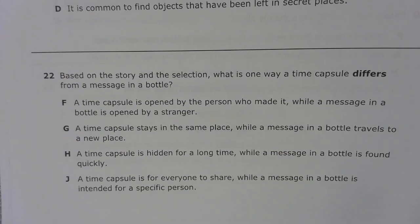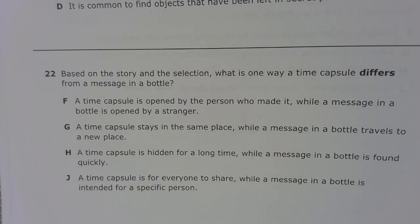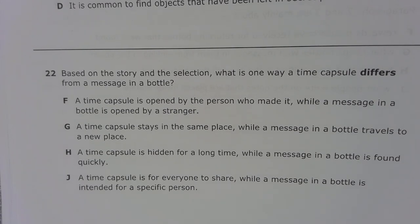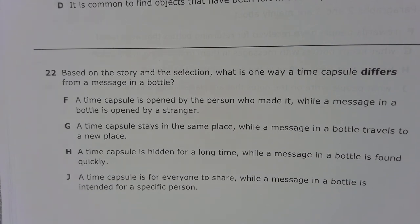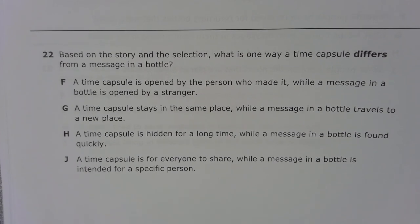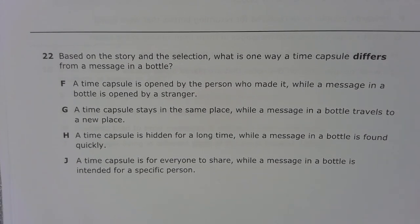Number 22. Based on the story and the selection, what is one way a time capsule differs from a message in a bottle? F. A time capsule is opened by the person who made it, while a message in a bottle is opened by a stranger. G. A time capsule stays in the same place, while a message in a bottle travels to a new place. H. A time capsule is hidden for a long time, while a message in a bottle is found quickly. J. A time capsule is for everyone to share, while a message in a bottle is intended for a specific person.